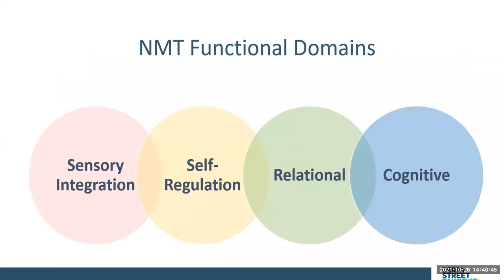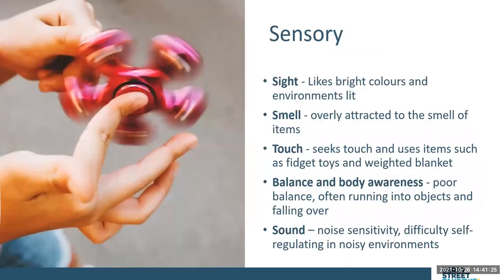With the NMT, we look at four domains: sensory integration, because children who've experienced trauma often have sensory issues that also overlap with other diagnoses; self-regulation, which is exceptionally common; relational functioning — their ability to form and establish relationships; and cognitive development. When we look at Simone across these four areas, some things really stand out.